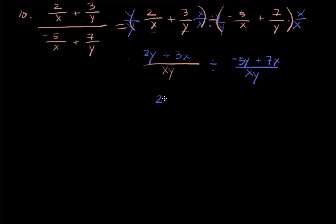Okay, now I can go ahead and take the reciprocal. I can make it into one long fraction. The x and y simplifies, so 2y plus 3x over negative 5y plus 7x.